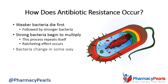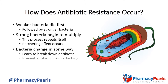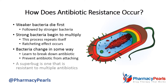In antibiotic resistance, bacteria will change in some way. For example, they may learn to combat an antibiotic by breaking it down or preventing it from attaching to a site it needs to work. Bacteria that become resistant to several different antibiotics are called superbugs.